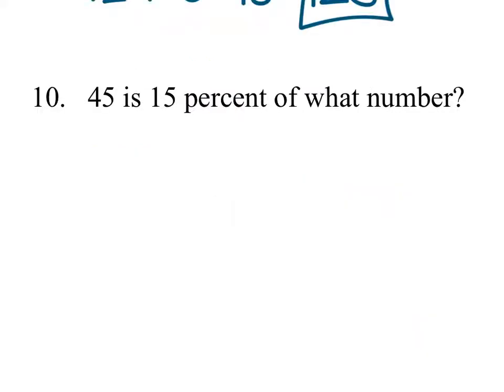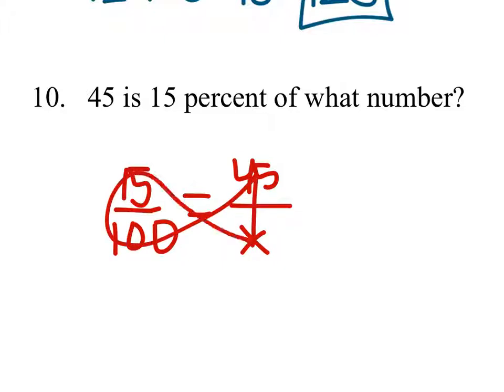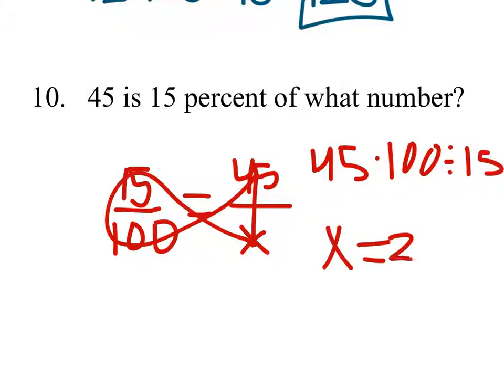It's out of 100, and then it gives us 15% and 45, and so that's X. So it's 45 times 100 divided by 15, and that equals 300.